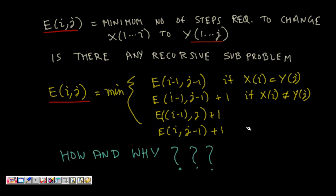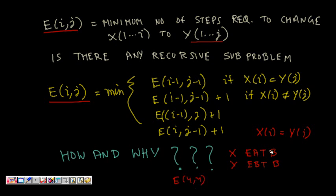Case 1: if X[i] equals Y[j]. For example, converting 'EATB' to 'EATB' — if the last characters of both strings are equal, our problem reduces to finding E[i-1, j-1], because we only need to convert the first i-1 characters of X to the first j-1 characters of Y. So: E[i,j] = E[i-1, j-1] when X[i] == Y[j].